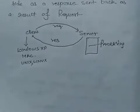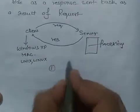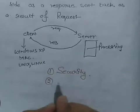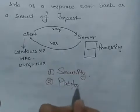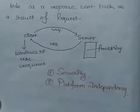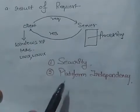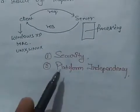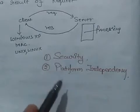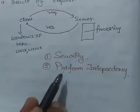There are two main problems of internet programming. Number one is security, and number two is platform independency. These two terms are most important for an internet programming language. If a language satisfies these two terms, then we can say that it is an internet programming language.